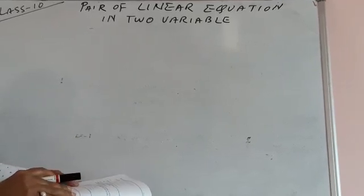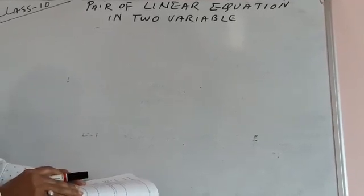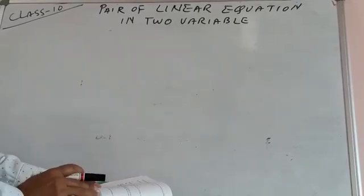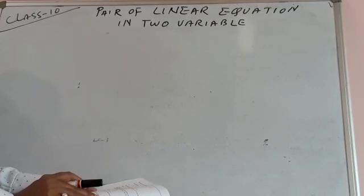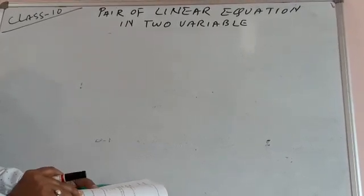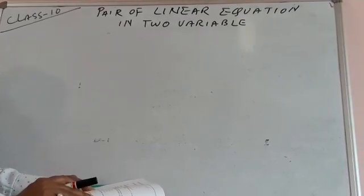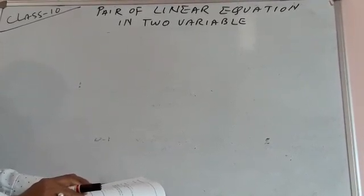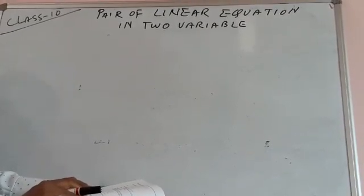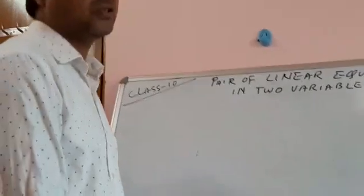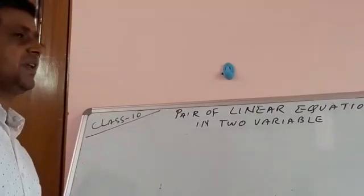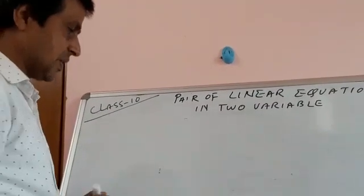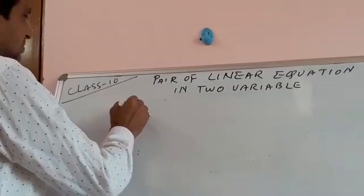In Exercise 3.5, the very first part of Question 1 is x − 3y − 3 = 0 and 3x − 9y − 2 = 0. I will not go for this question because algebraic methods are useful to find a unique value of x and y. Here a1/a2 = b1/b2 = 1/3, so there's no unique solution. For any solution, we need to check whether a1/a2 ≠ b1/b2.